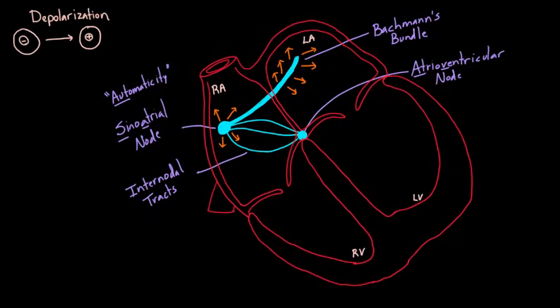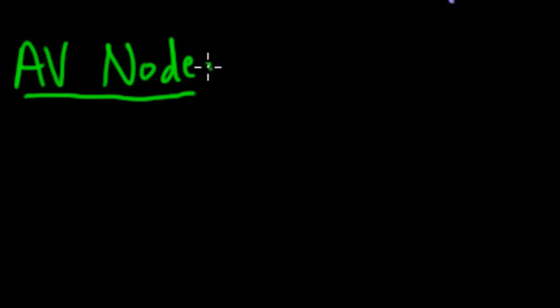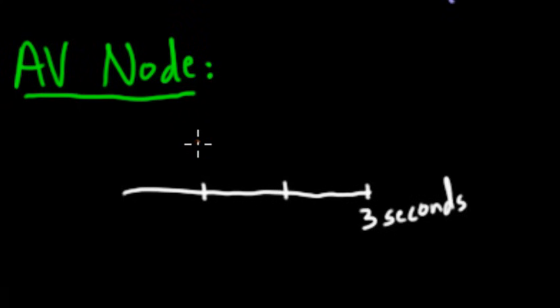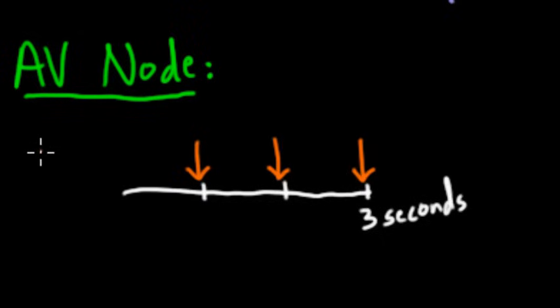At the AV node, something interesting happens. Let's imagine a little timeline of one, two, three seconds. Your job is just to watch the atria and see how they contract. You notice one contraction there, one there, and one there — so the atria are contracting three times in three seconds. Now do the exact same thing for the ventricles, and you notice a contraction there, and again there, and one more there. So both the atria and the ventricles are contracting the same number of times.